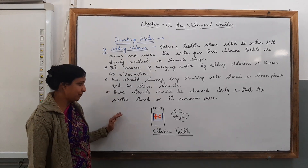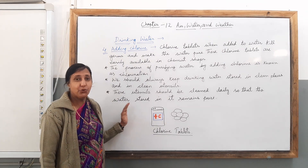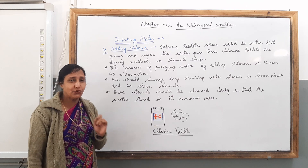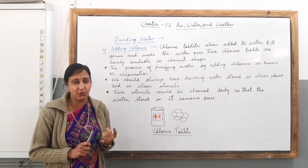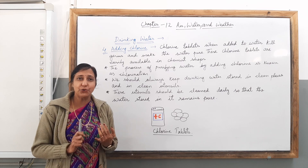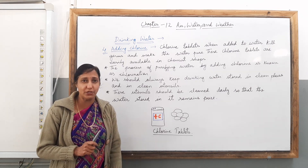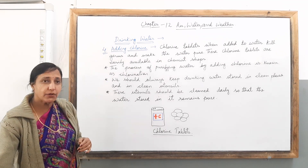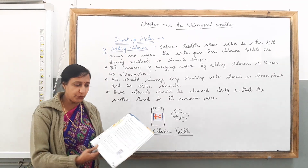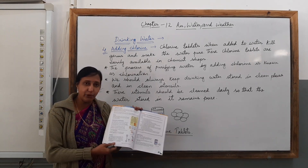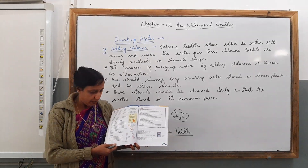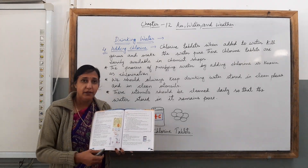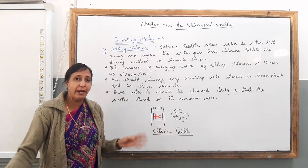I hope with the help of this video, you are able to understand what chlorination is all about. Try to remember all four methods of making water clean that you have learned. The first is boiling water for 15 to 20 minutes. Then sedimentation and decantation. Then filtration. And in today's class, you have learned how to make water clean by adding chlorine tablets.